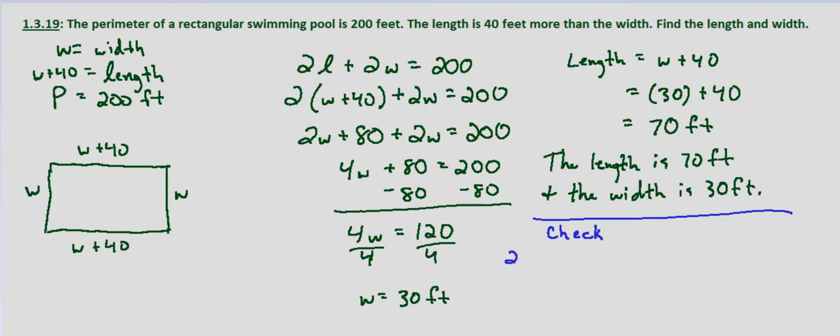Let's check: 2 times 70 plus 2 times 30—we want to know, does that equal 200? That's 140 plus 60. Does that equal 200? Yes, it checks: 200 equals 200. So our solution is the length is 70 feet.